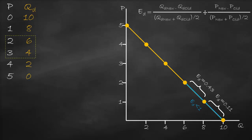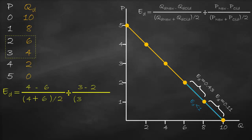Now let's calculate price elasticity of demand from price 2 to 3. New quantity demanded is 4 minus 6, divided by its average (4 plus 6) divided by 2, divided by new price 3 minus old price 2, divided by the average (3 plus 2) divided by 2. This gives us negative 0.4 divided by 0.4, which equals negative 1.